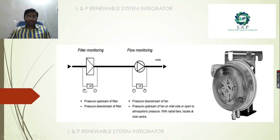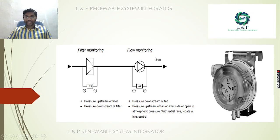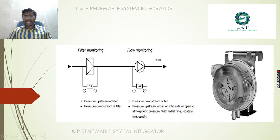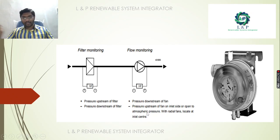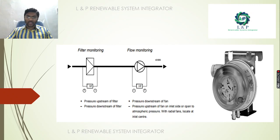When used for filter monitoring, the positive side is used for pressure upstream and the negative side for pressure downstream. For monitoring flow, the positive side is used for pressure downstream of the fan and the negative side for pressure upstream. Sometimes, if there is no provision to connect the upstream, you can connect the negative point open to atmospheric pressure — it will compare with atmospheric pressure against the set point, and if the difference exceeds the set point, it will close the contact from NO to NC.